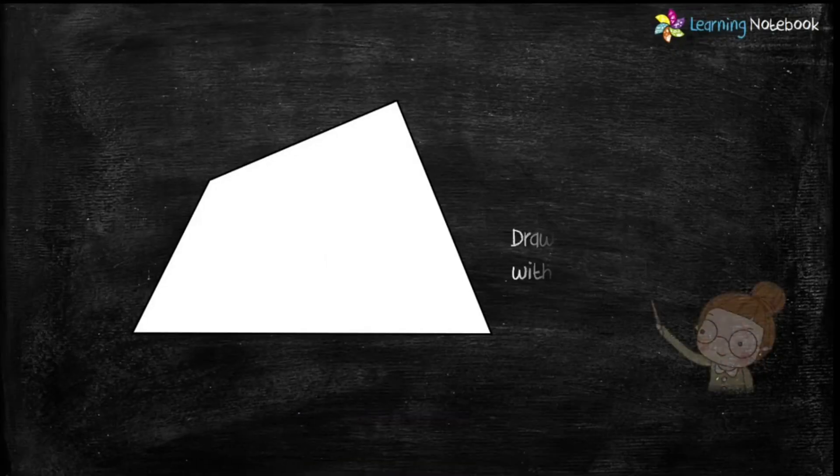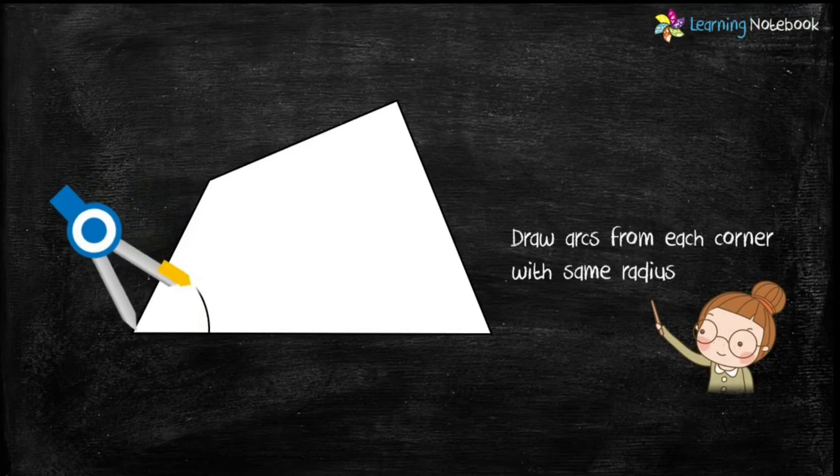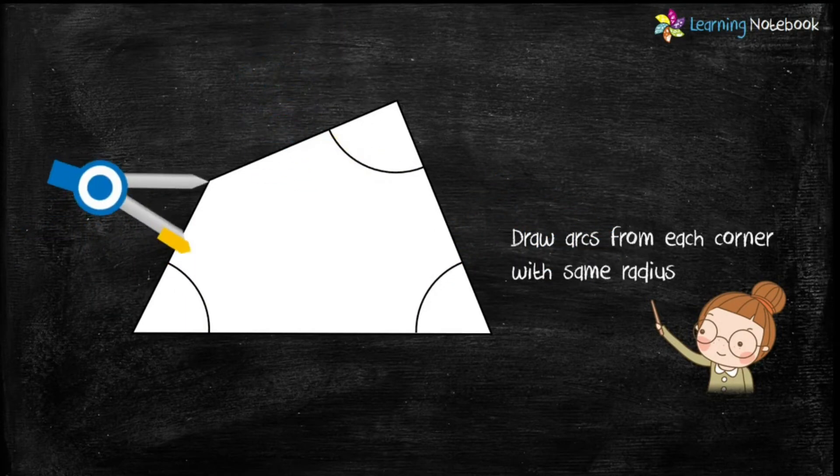Now students, with the help of a compass, draw an arc at each corner of the quadrilateral with the same radius.